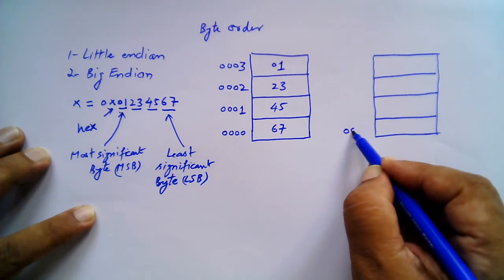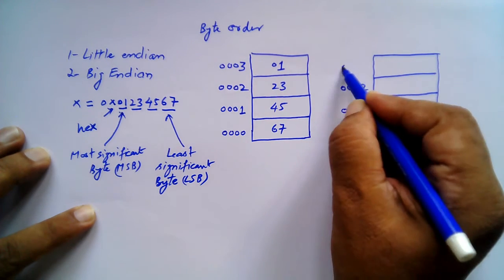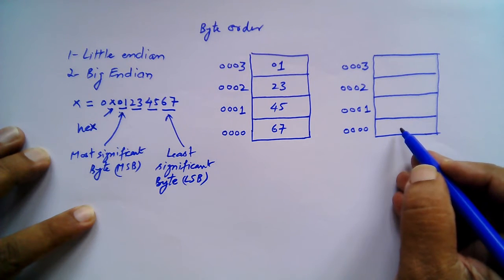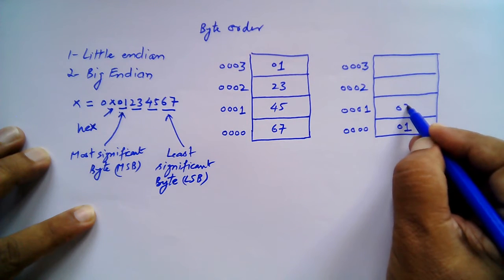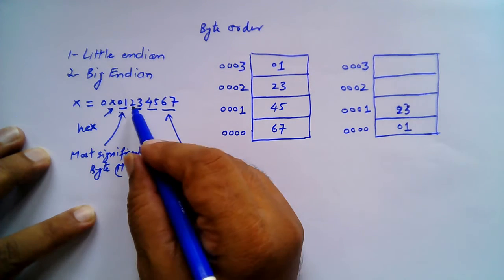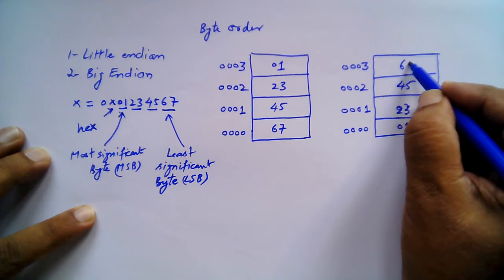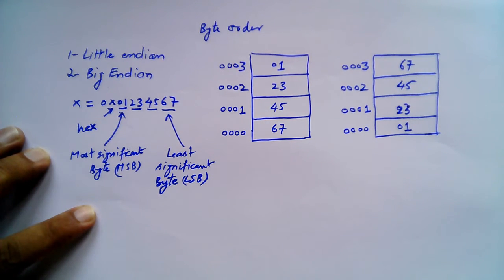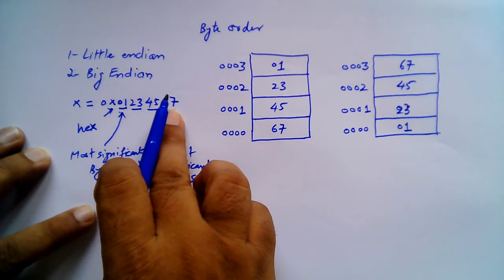Now let's sketch the memory again with four bytes at addresses 0x0000 through 0x0003. In this method, at the least address we store the most significant byte 01, then 23, then 45, and then the least significant byte 67 at the highest address. These are two different ways of storing this number in memory.